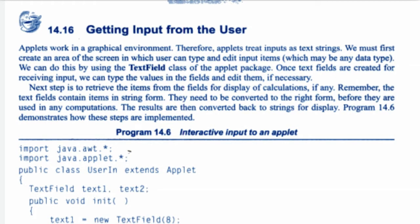Getting input from the user. Applets work in a graphical environment, therefore applets treat inputs as text strings. We must first create an area of the screen in which the user can type and edit input items, which may be any data type. We can do this by using the TextField class of the applet package. Once text fields are created for receiving inputs, we can type the values in the fields and edit them if necessary. The next step is to retrieve the items from the fields for display or calculations. Remember the text field contains items in string form.